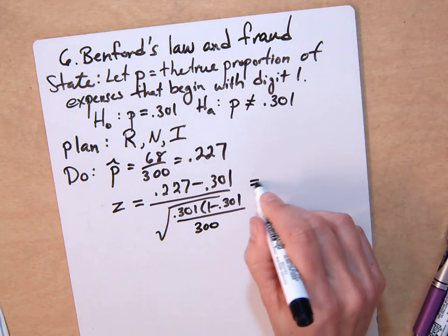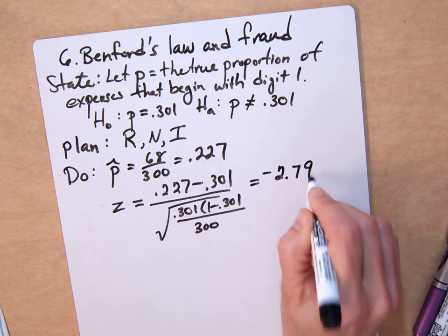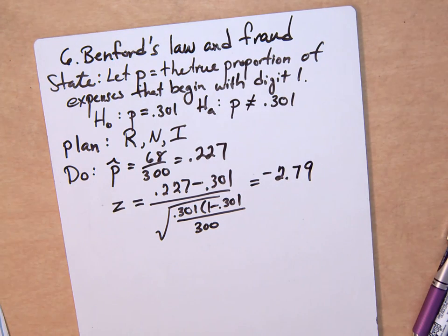which is the square root of P times (1 minus P) over sample size N, or negative 2.79. So that many standard deviations to the left.